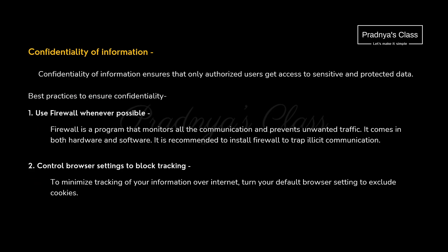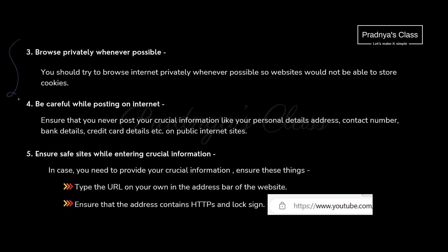To secure your personal information over the internet, you can use certain steps. First, use a firewall — it prevents unwanted traffic and comes in the form of software as well as hardware. Along with that, check the settings of your browser. Here are some more measures: browse privately, be careful while posting on the internet, and check the URL of the website to verify whether it is an authenticated or fake website.